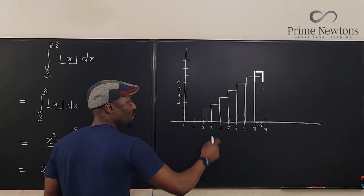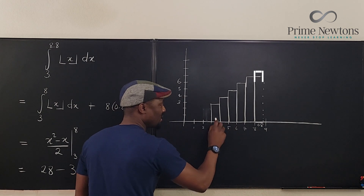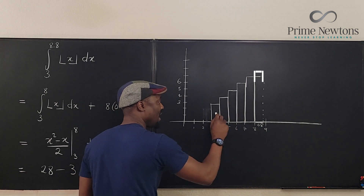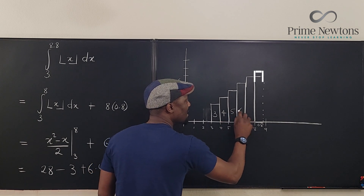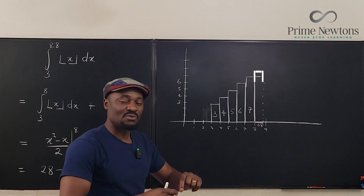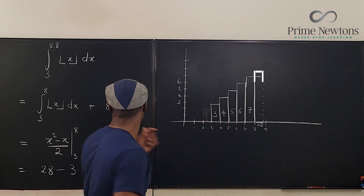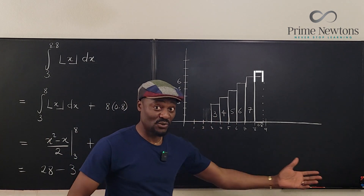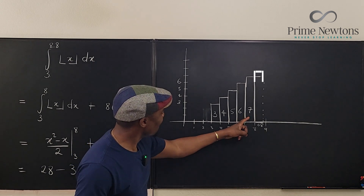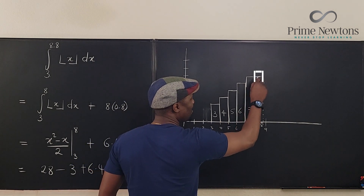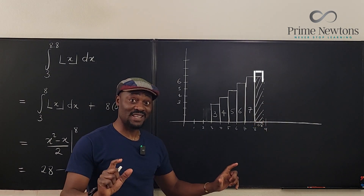How did we come about that formula? We just added the areas: 1 times 3, 1 times 4, 1 times 5 — so the area of each rectangle was 3, 4, 5, 6, 7. It's like an arithmetic progression, and you add all the terms together. That's how we arrived at the formula x squared minus x over 2. I'll leave the link to that video in the description.